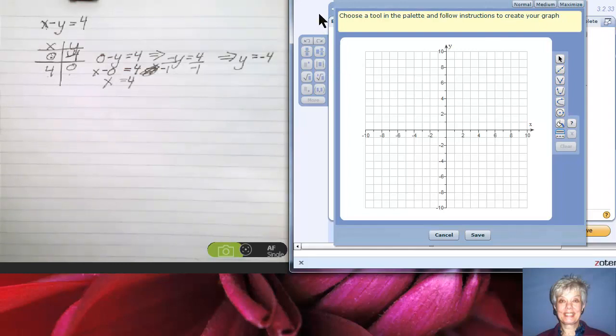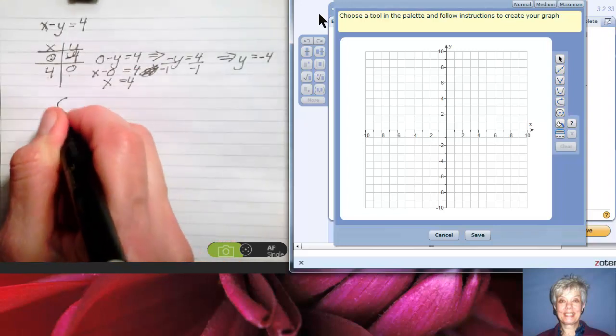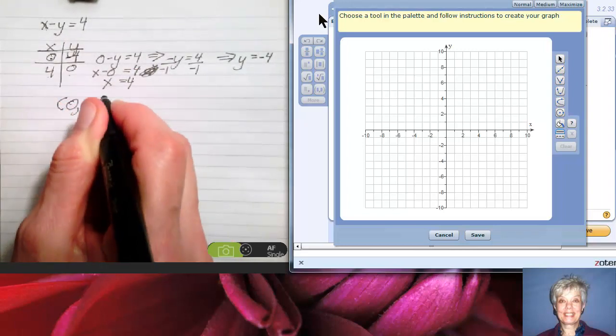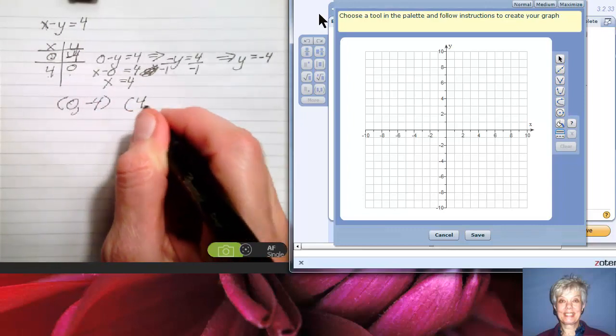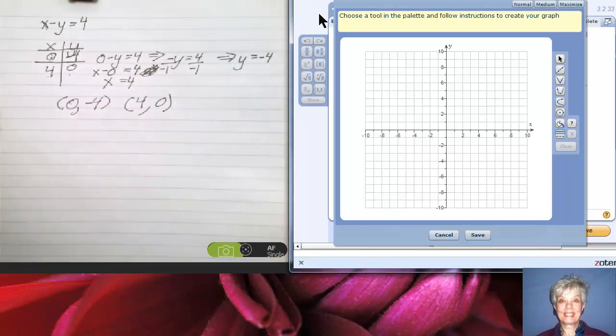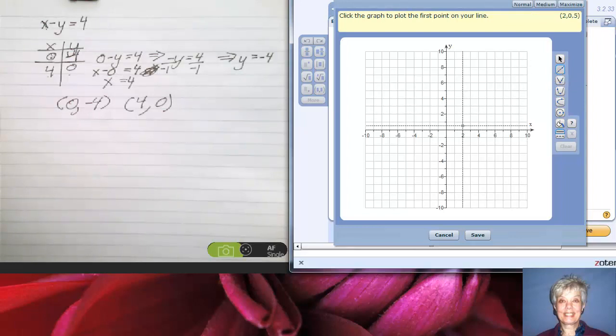Let me write that a little more clearly so you can see it. I've got the point (0, -4) and I have the point (4, 0). Now I'm going to get the graphing tool, the line tool. I'm going to go to (0, -4), which is this point, and I'm going to click. Then I'm going to the point (4, 0). This can be tricky until you get used to it. Here's the point (4, 0). Click.